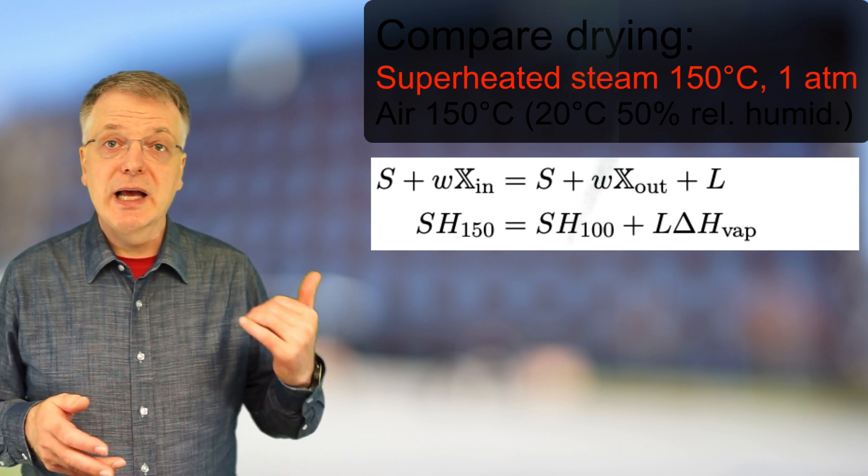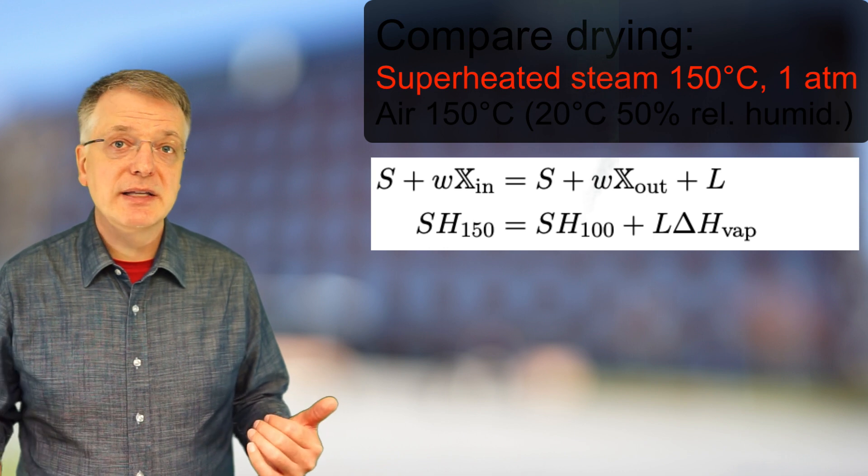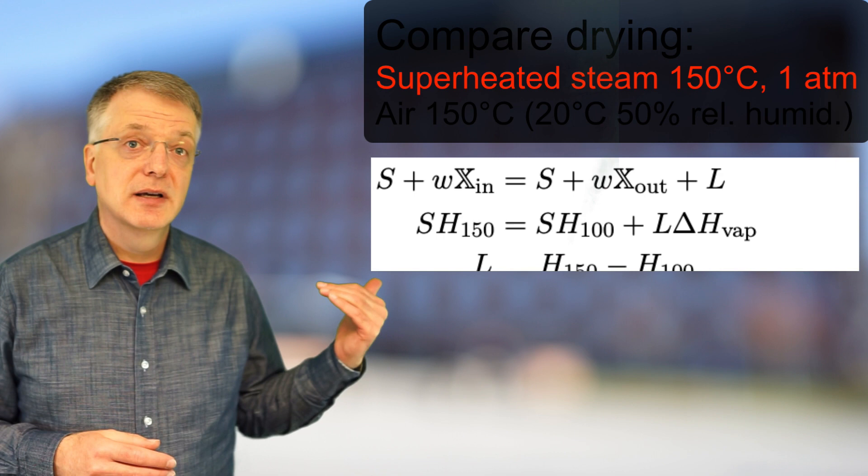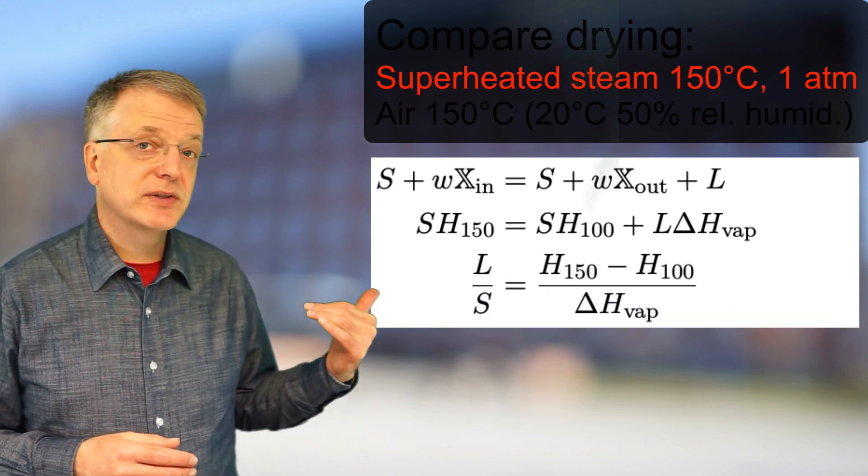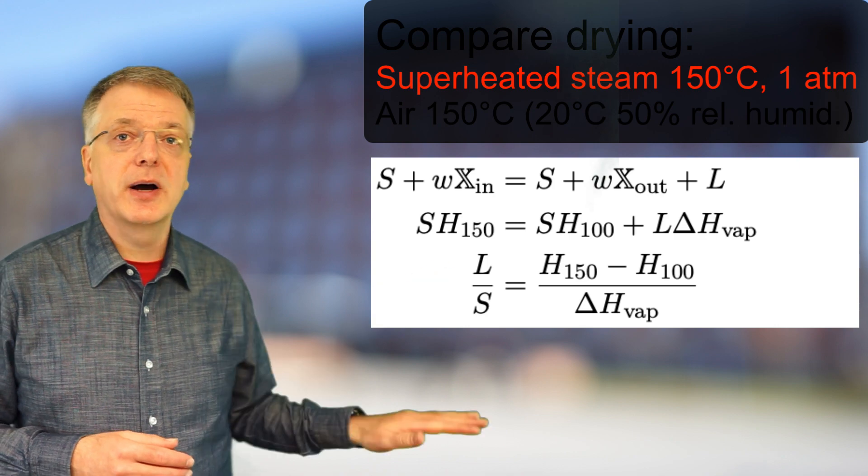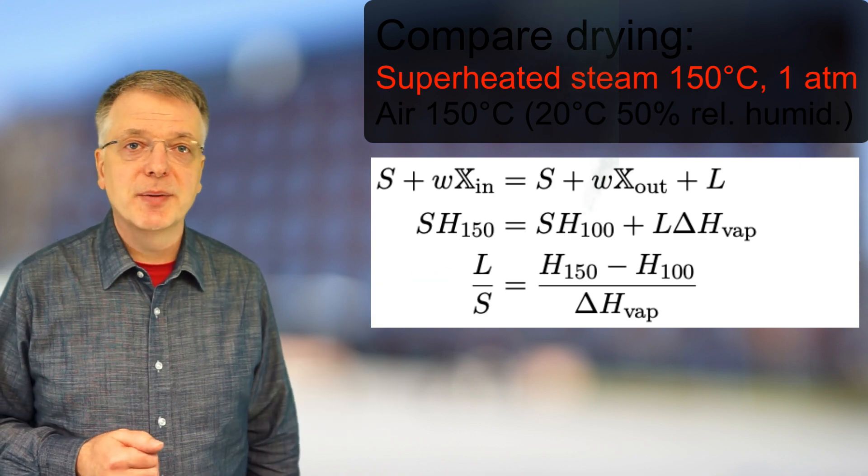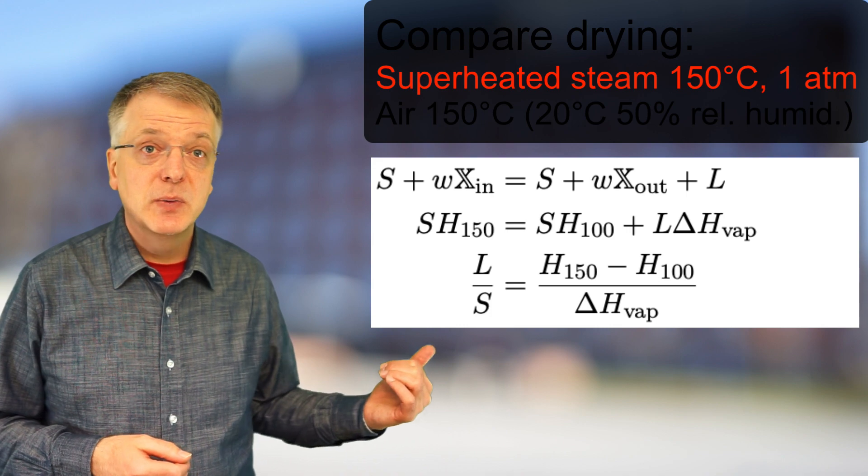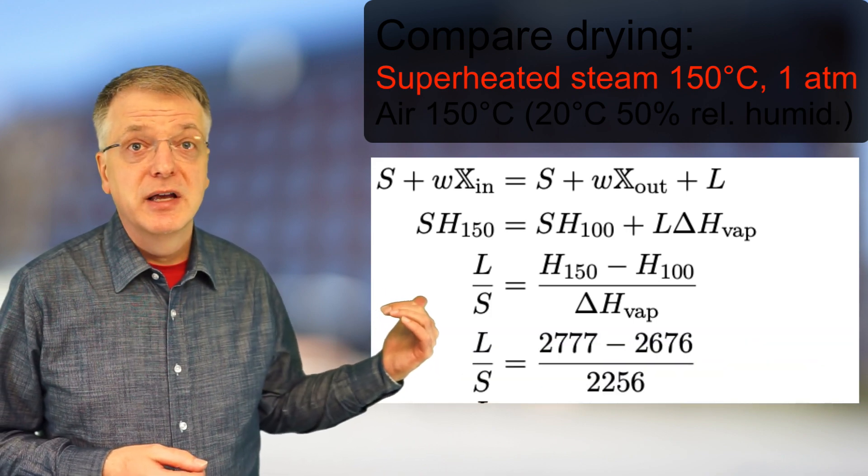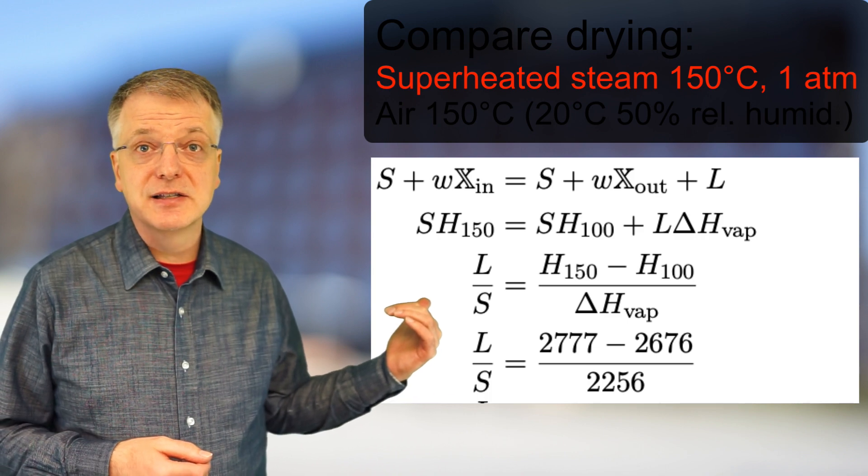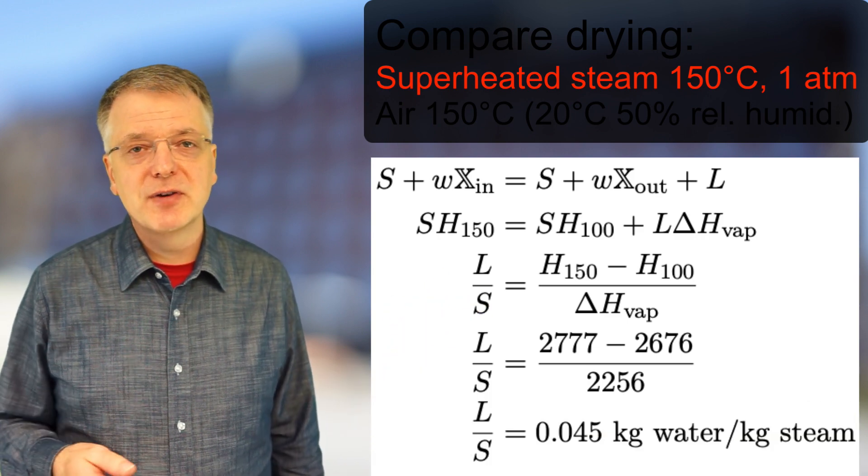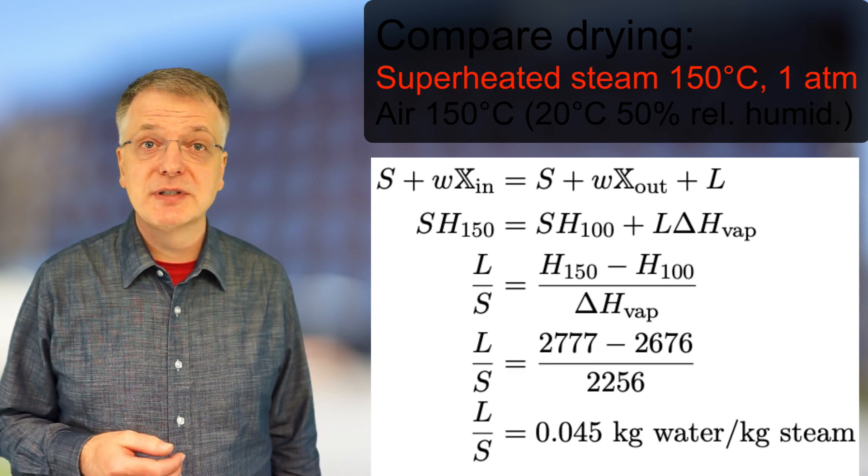If we solve for L in the mass balance and solve for S in the energy balance, and divide the mass balance with the energy balance, we get L divided by S equals enthalpy at 150 minus enthalpy at 100 divided with evaporation enthalpy. Looking up the values in a table, we get L divided by S equals 2777 minus 2676 divided with 2256 or 0.045 kilogram of evaporated water per kilogram of steam.